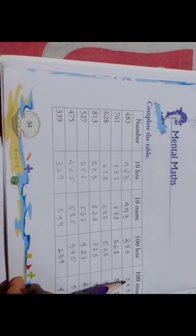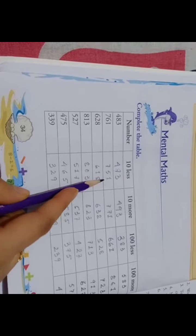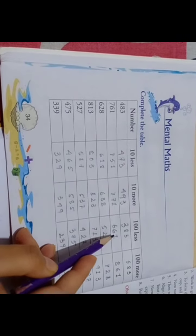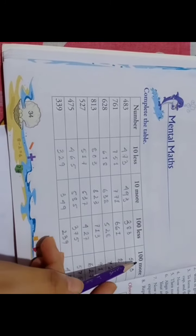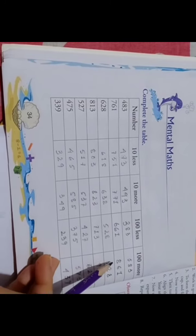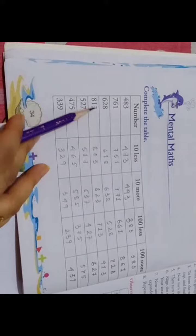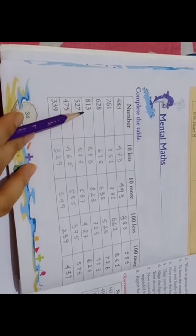For 761: 10 less is 751, 10 more is 771, 100 less is 661, 100 more is 861. For 628: 10 less is 618, 10 more is 638, 100 less is 528, 100 more is 728.